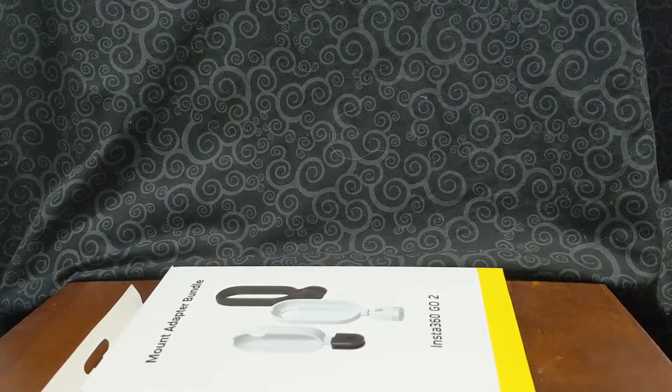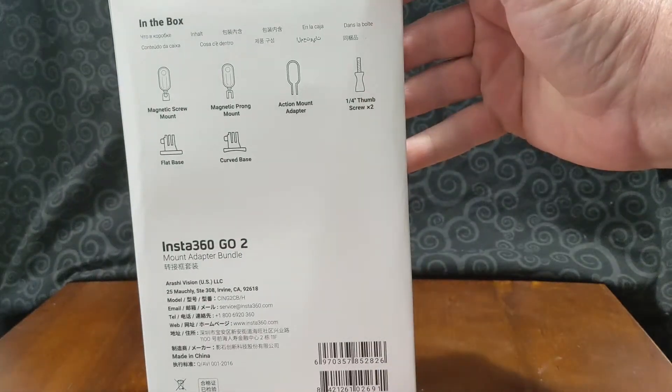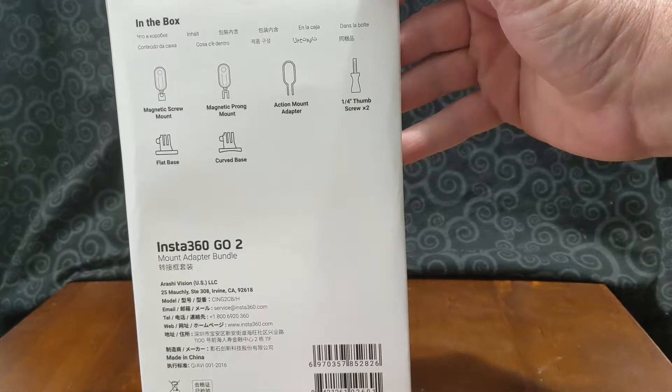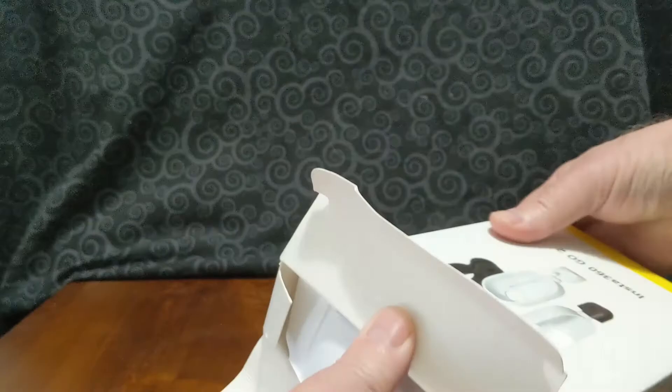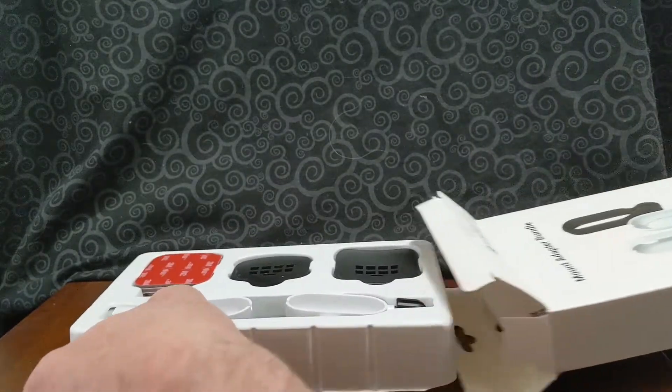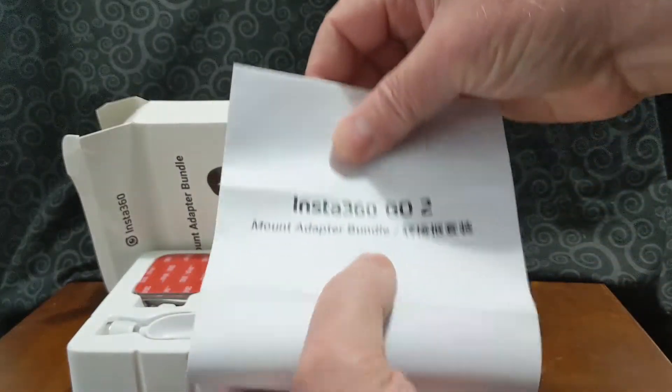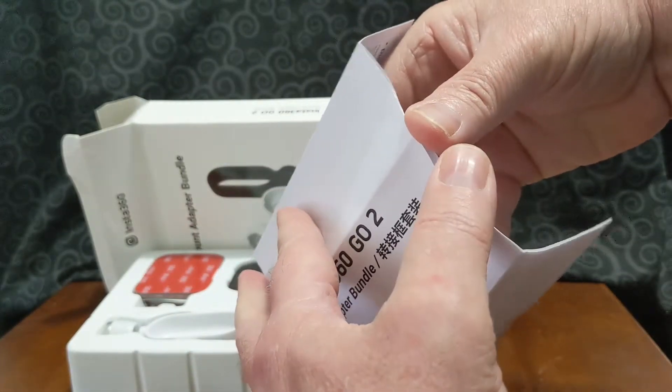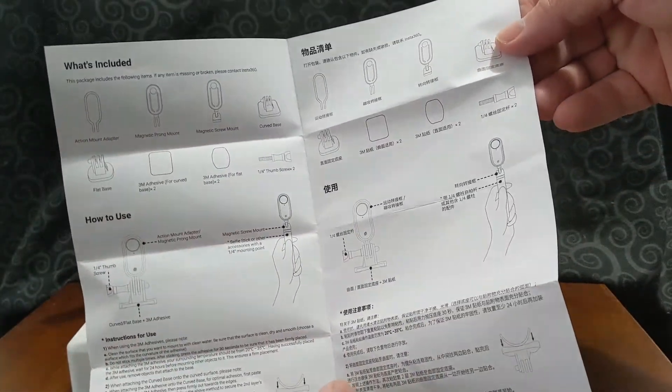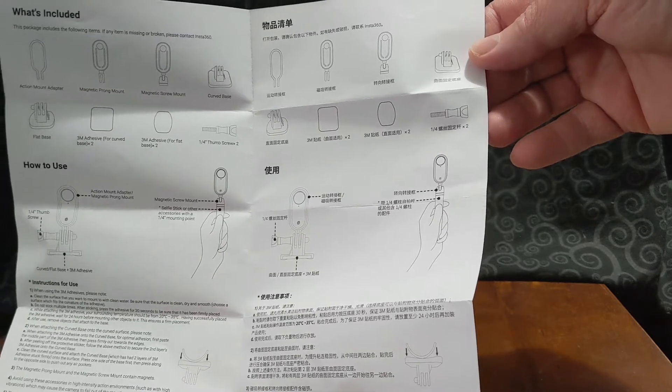And the other thing that I ordered was the mount adapter kit. It comes with various mount adapters. Let's open that. See what we have inside. Now it comes with a little piece of documentation. It has some instructions, which are actually nice. Kind of gives you an idea of what you have and what you can do with it. Kind of like that.